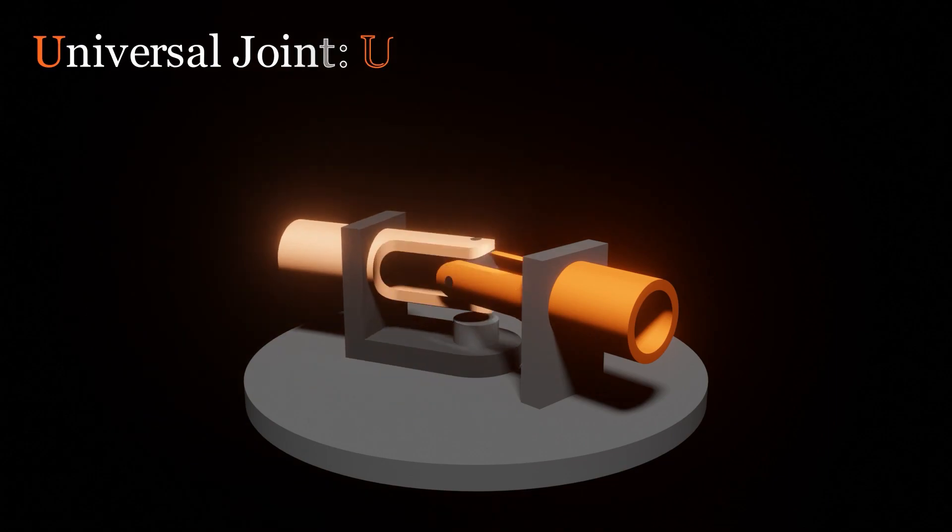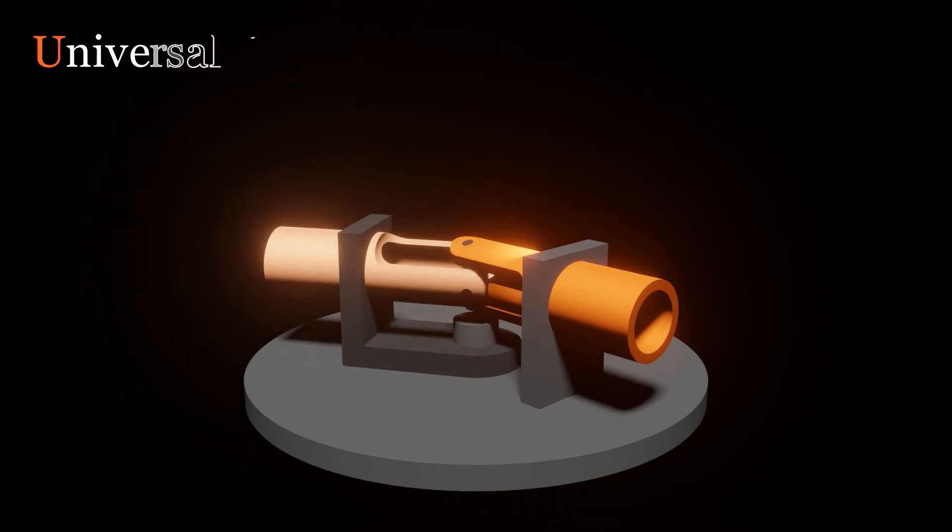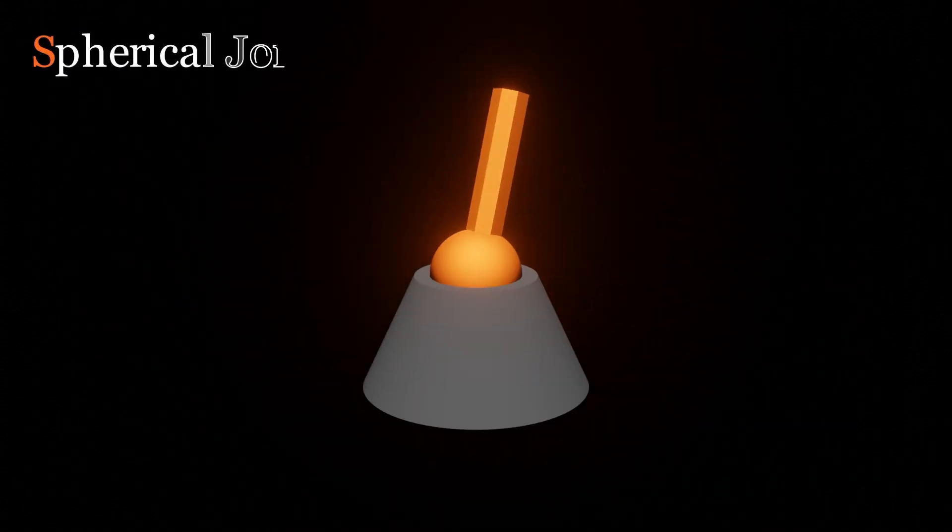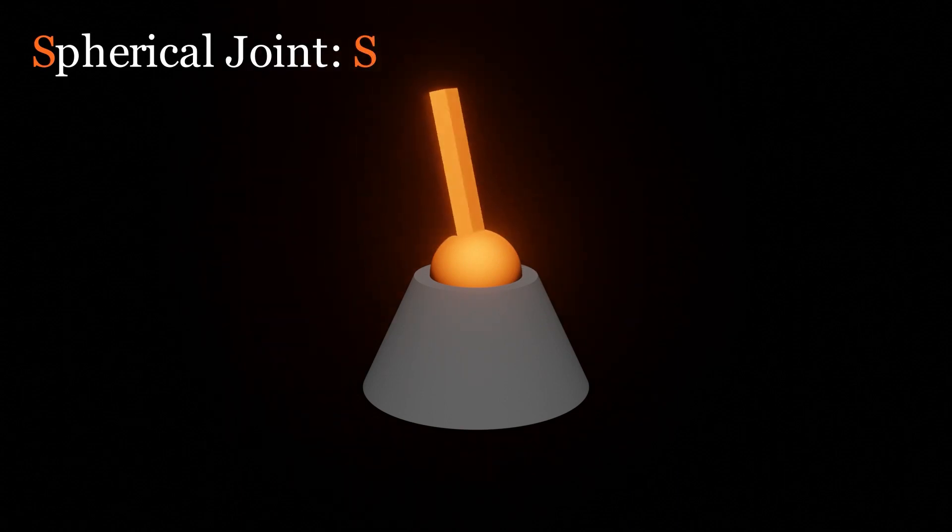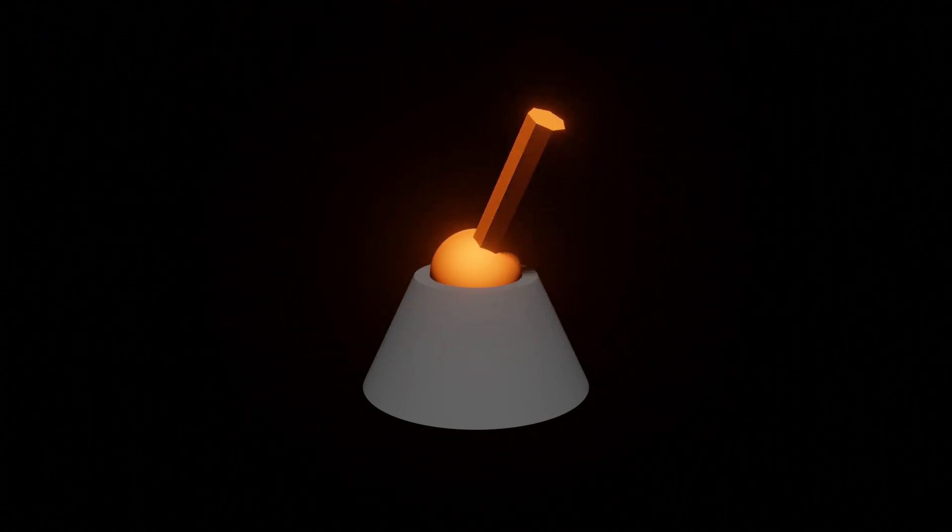A universal joint, also called Cardan joint, Hooke's joint and by many other names, is a combination of two revolute joints that are orthogonal to each other. A spherical joint, also called ball and socket joint, is a combination of three mutually perpendicular revolute joints sharing the same center of rotation.